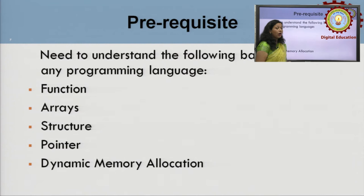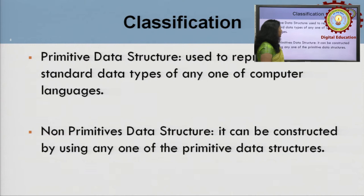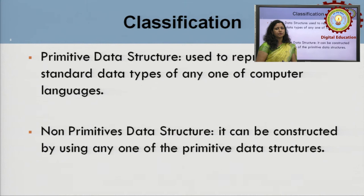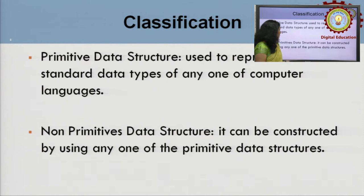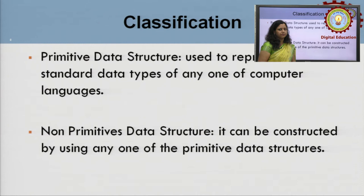Now we come to the classification of data structure. Basically it is divided into two categories: first is primitive data structure and second is non-primitive data structure. Primitive data structures are the fundamental data structures — whatever fundamental data structures exist in the programming language we are using, those are called primitive data structures. Non-primitive data structures are user-defined data structures built using these fundamental ones.